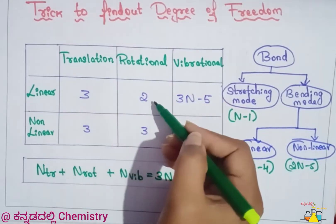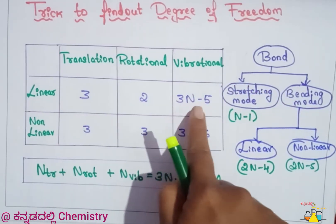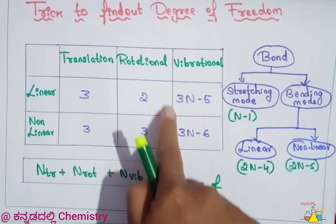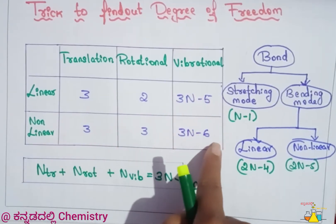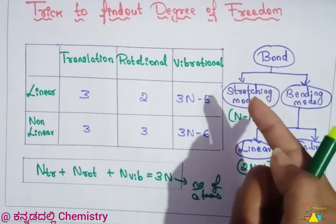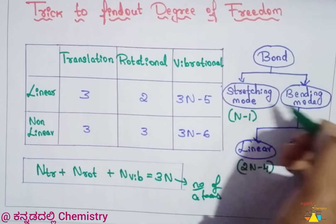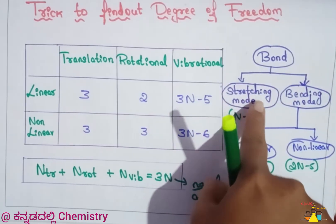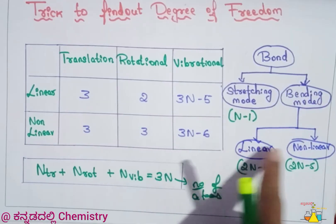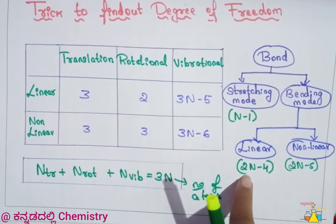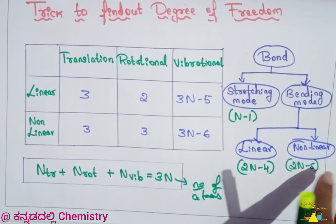Rotationally: linear molecule has 2, non-linear has 3. Vibrationally: linear molecule has 3n minus 5, non-linear has 3n minus 6. For bond stretching, the formula is n minus 1. For bending modes: linear molecule uses 2n minus 4, non-linear uses 2n minus 5.